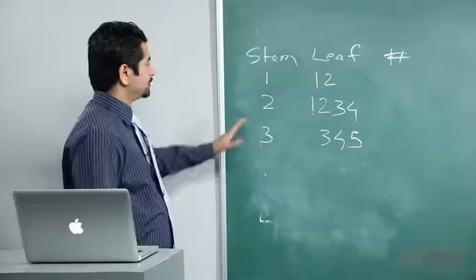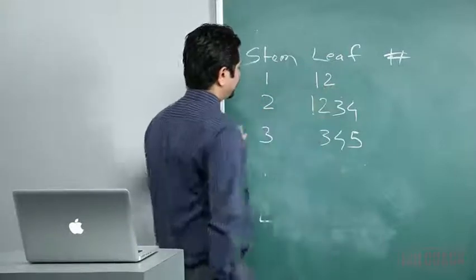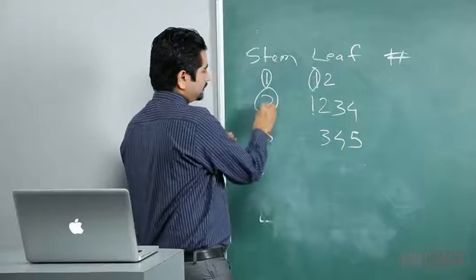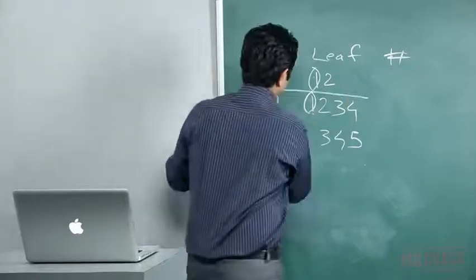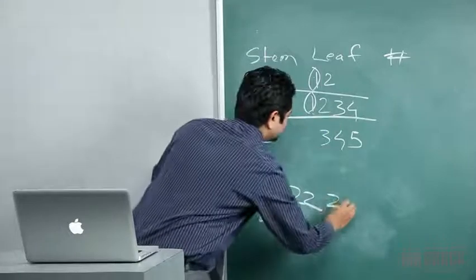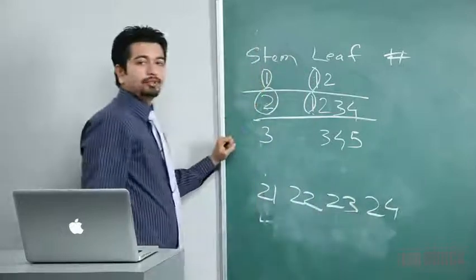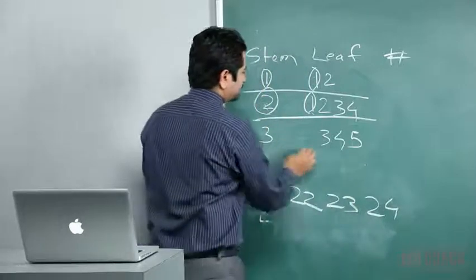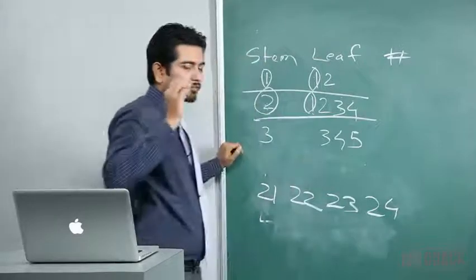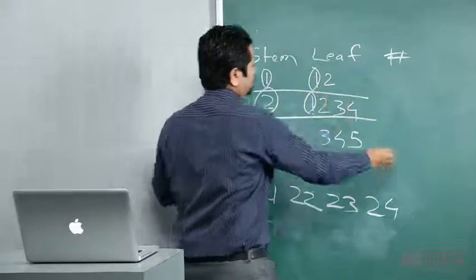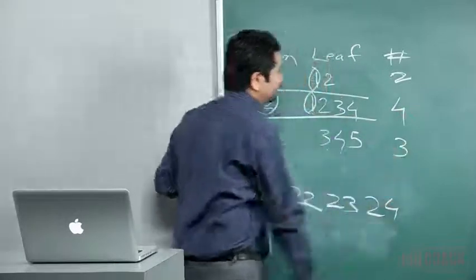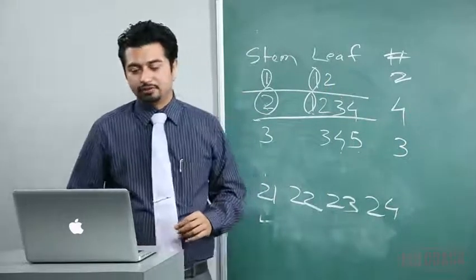How to read a stem and leaf diagram: the stem is the first digit and the leaf is the second digit. For a stem of 2 with leaves 1, 2, 3, 4 — the data set contains 21, 22, 23, 24. For a stem of 3 with leaves 3, 4, 5 — it contains 33, 34, 35. The hash (n) tells you how many observations are in each group.